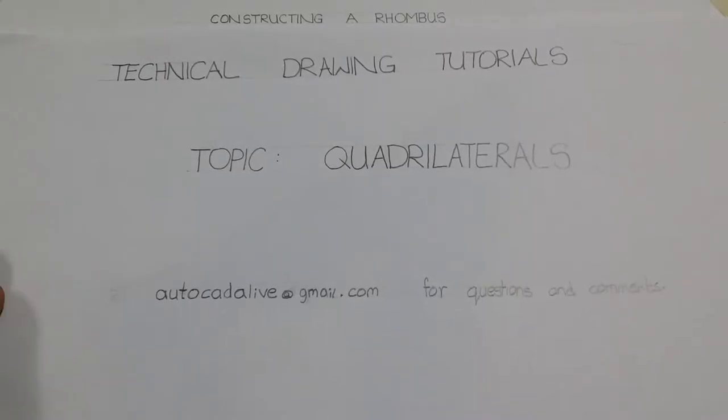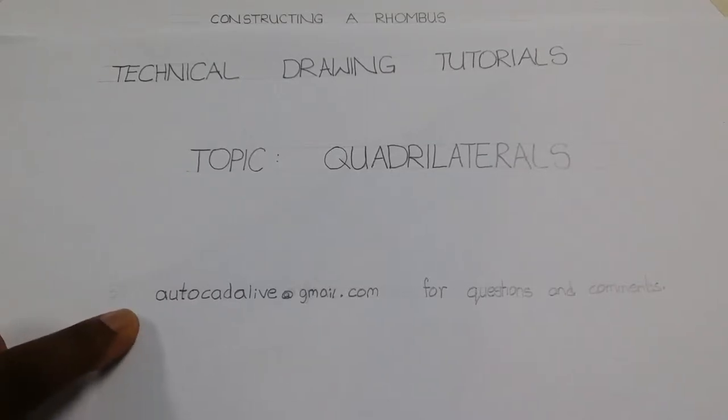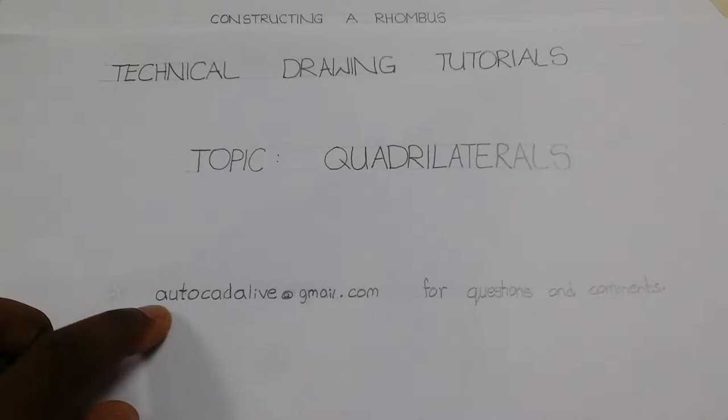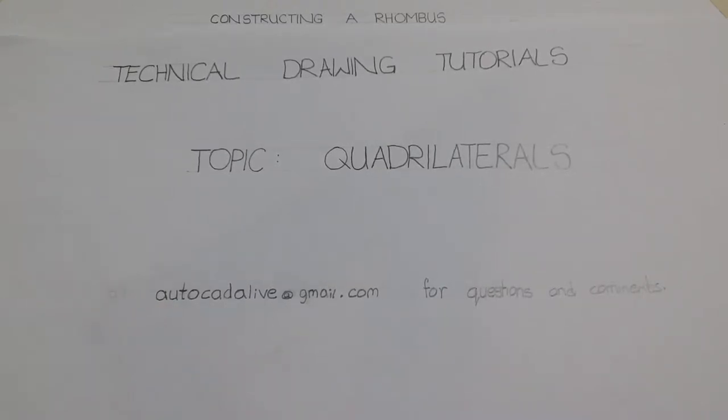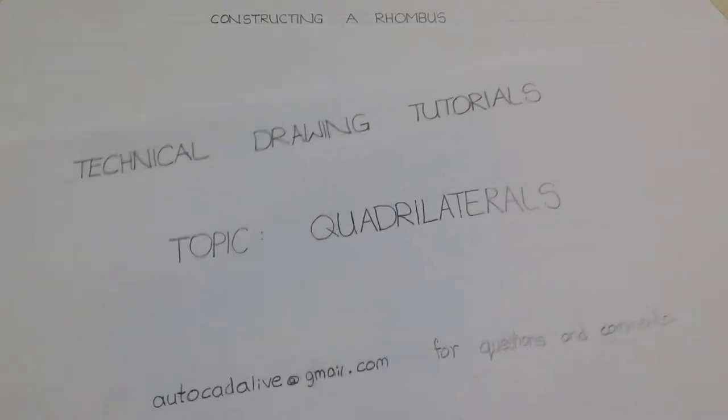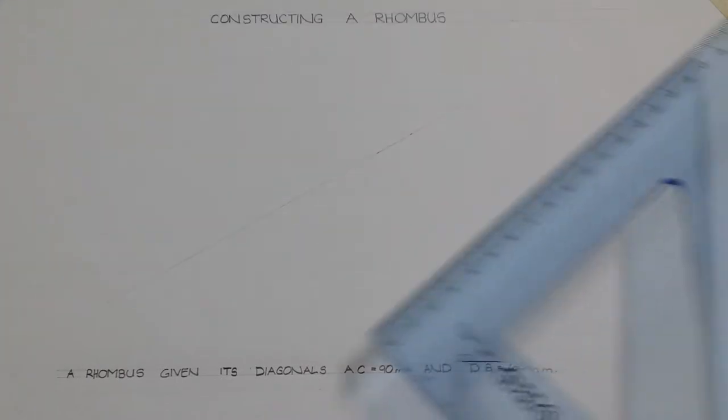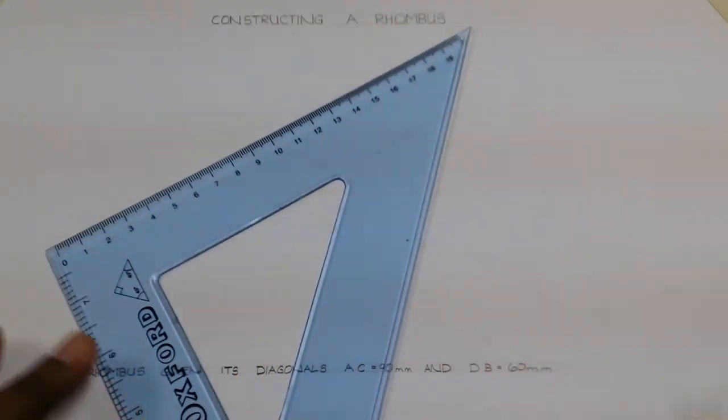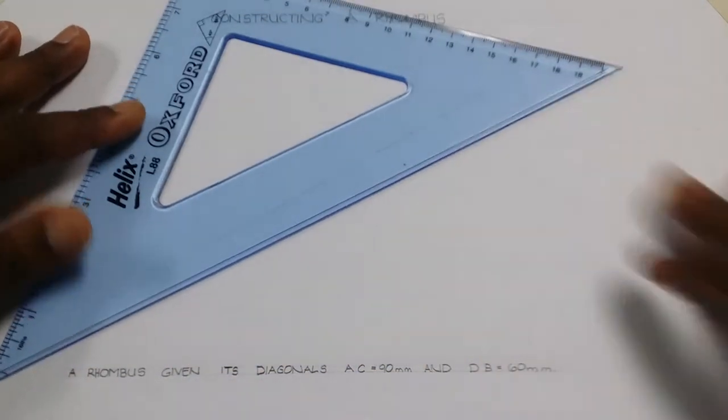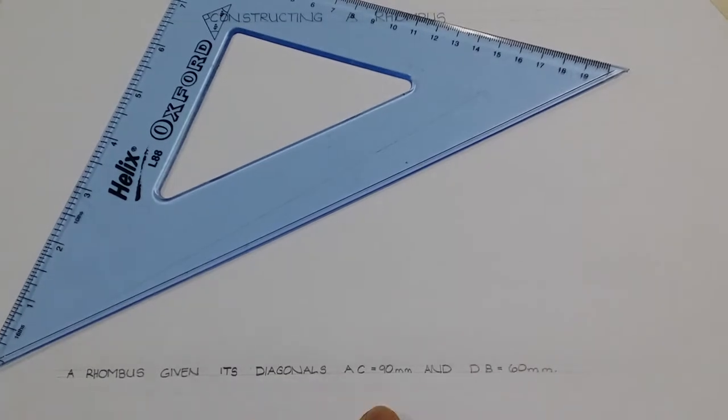Good day and welcome to our technical drawing tutorials with our topic: quadrilaterals. If you have any questions and comments, you could contact me at autocadalive@gmail.com. Today we continue with the construction of a rhombus given its diagonal AC equal to 90 mm and DB equal to 60 mm.